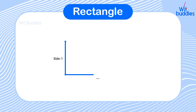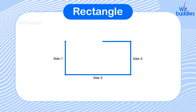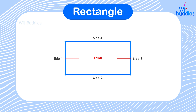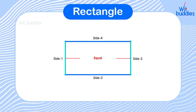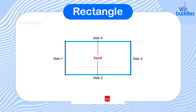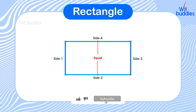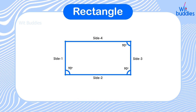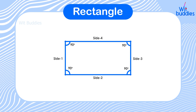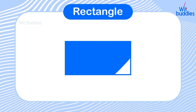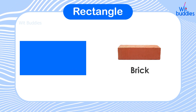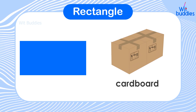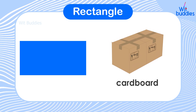Rectangle: A rectangle is a 2D shape which has four sides where the opposite sides are equal and parallel to each other. All the angles of a rectangle are equal to 90 degrees. A brick, TV, and cardboard are the best examples of a rectangle.